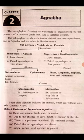The subphylum Craniata, or Vertebrata, is characterized by the presence of a cranium and vertebral column. Subphylum Vertebrata is further divided into two super classes. The cranium, or brain box, is present to enclose the brain, and a vertebral column is also present.